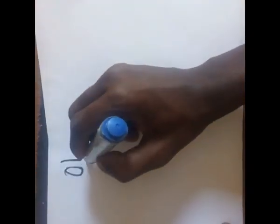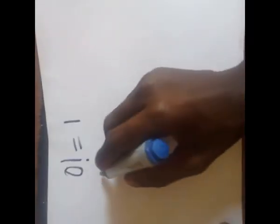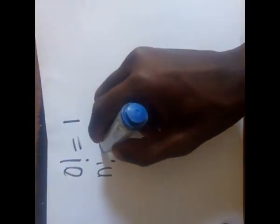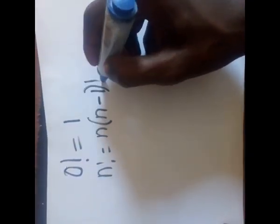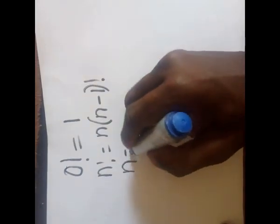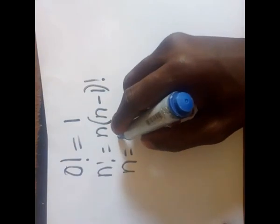Hello everyone, today I want to prove that 0 factorial equals 1. We already know that n factorial equals n times (n-1) factorial, where n is a positive number.